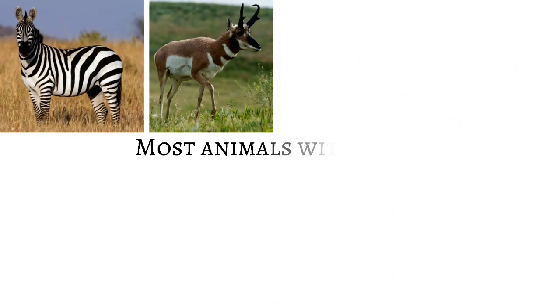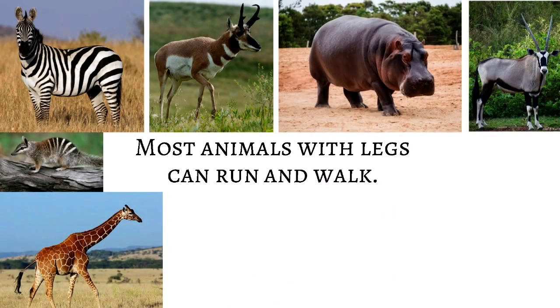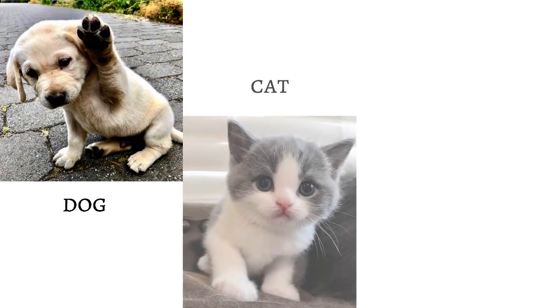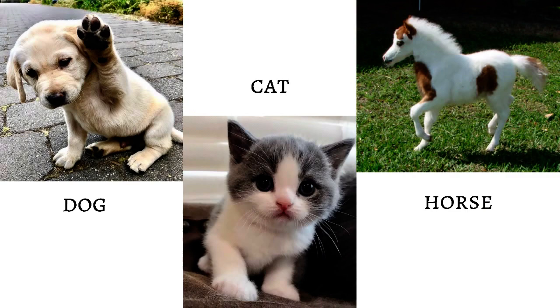Most animals with legs can run and walk. Can you give some examples of such animals? Dogs, cats, and horses are some examples of these animals.